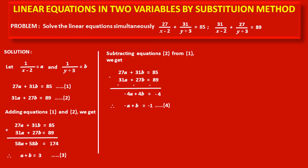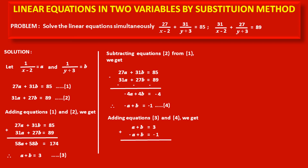Now we have two new equations, 3 and 4, which are comparatively easier than equations 1 and 2. Instead of equations 1 and 2, we now solve equations 3 and 4 to find values of a and b first, and then use those values to find original variables x and y. Adding equations 3 and 4: (a + b = 3) + (-a + b = -1).